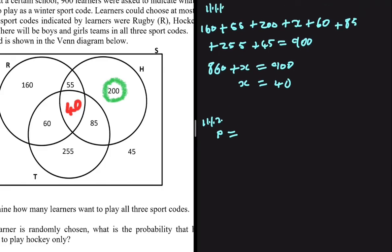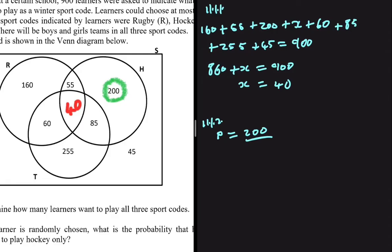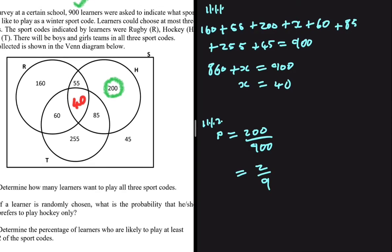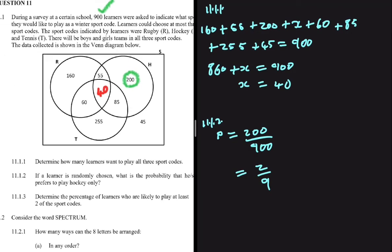So the probability that a learner prefers to play only hockey is 200 divided by the total number of learners, which is 900. This simplifies to 2/9 — in other words, 2 in every 9 learners prefer to play only hockey.